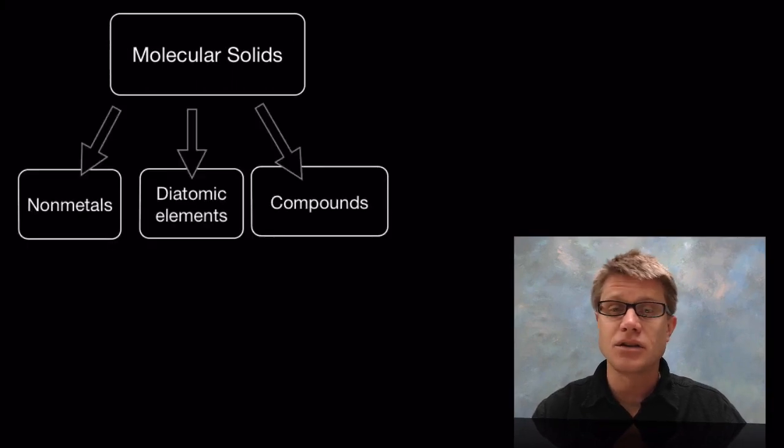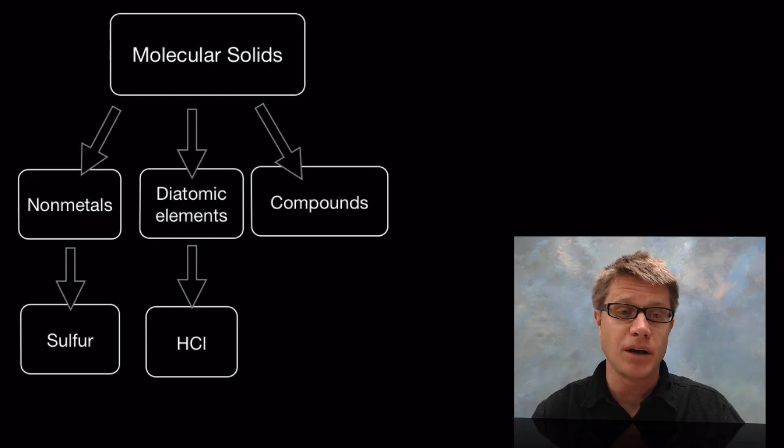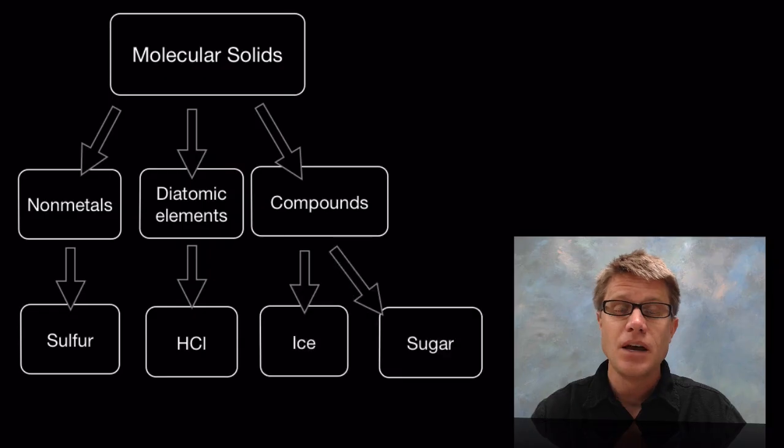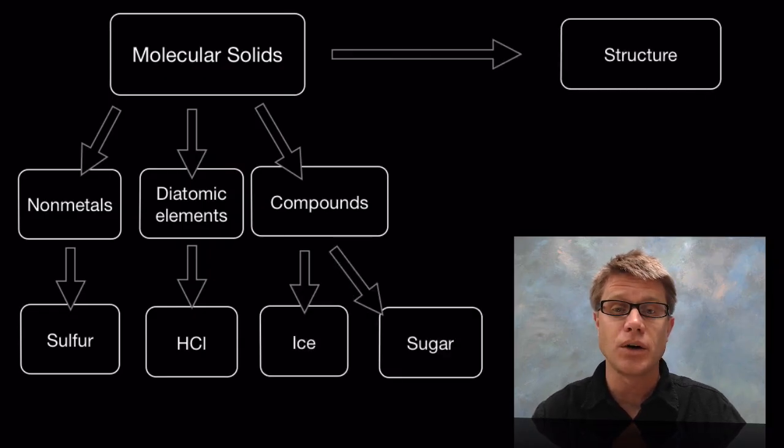Molecular solids could be nonmetals, diatomic elements, or compounds. An example of a nonmetal might be sulfur itself, which connects together in eight atom molecules. It could be diatomic molecules like solid hydrochloric acid, or compounds like ice or sugar.